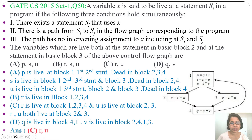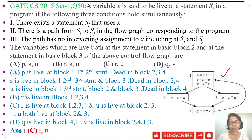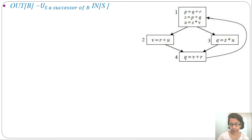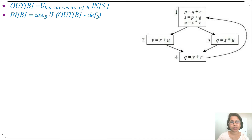So the answer is option C — R and U are live in both block 2 and block 3. In the live variable analysis lecture I explain this using in and out sets according to Ullman's book. Let me also verify using in and out so you can understand. The formula for out is: out(B) = union of in(successor). The formula for in is: in(B) = use(B) union (out(B) minus def(B)).